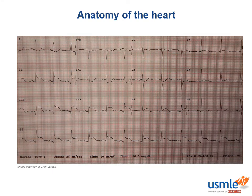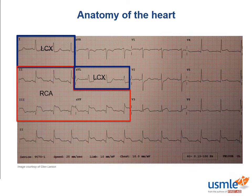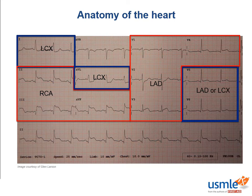Now you know which leads go in which directions, but which coronary arteries do each of these respond to? For leads 1 and AVL, if you see changes — particularly ST elevations — you should think of the circumflex, since these are the lateral leads and the lateral side of the heart is where the circumflex sits. For leads 2, 3, and AVF, think right coronary artery. For leads V1 through V4, think LAD. For leads V5 and V6, think LAD or circumflex. This will be reviewed again in the CV Pathology section.